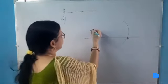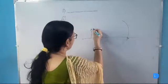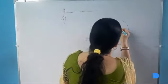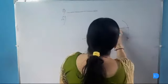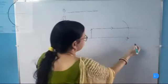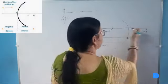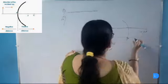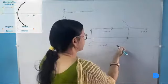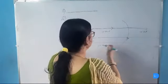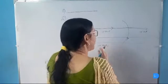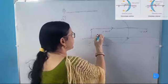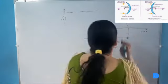All the distances that are in the same direction as that of the incident light are taken as positive. All the distances that are on the right hand side of the pole will become positive. And all the distances that are on the left hand side will be considered as negative because incident light travels from left to right.